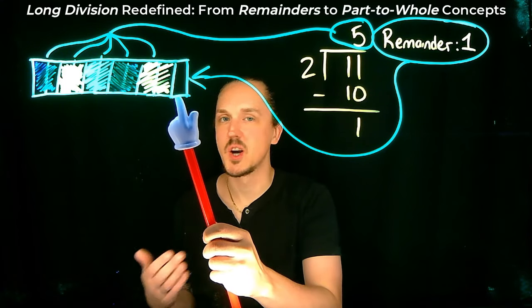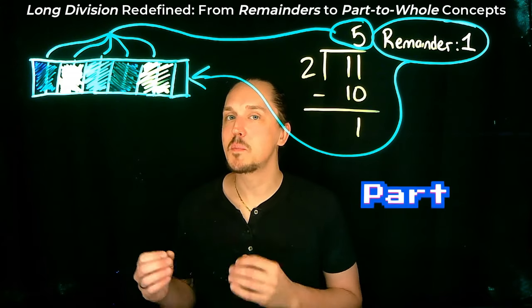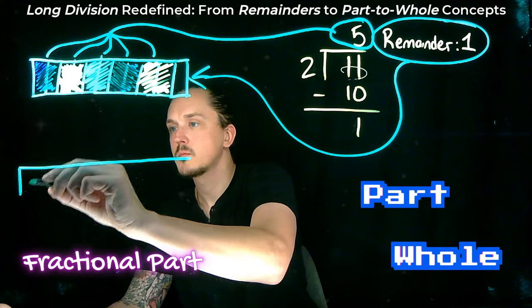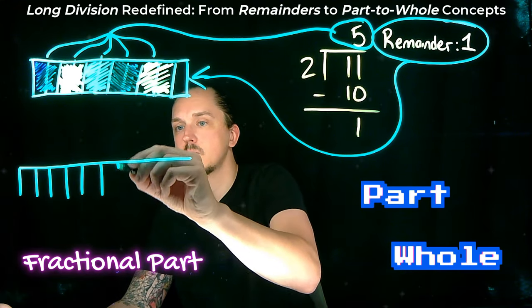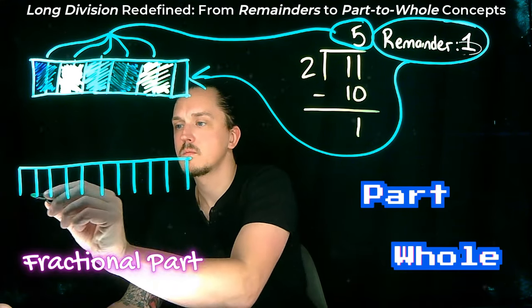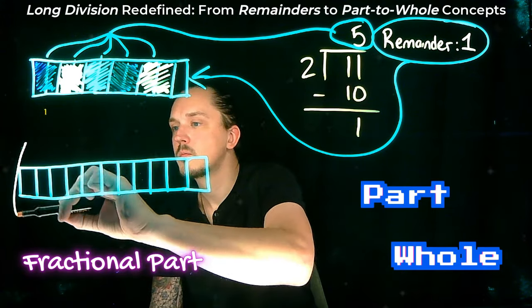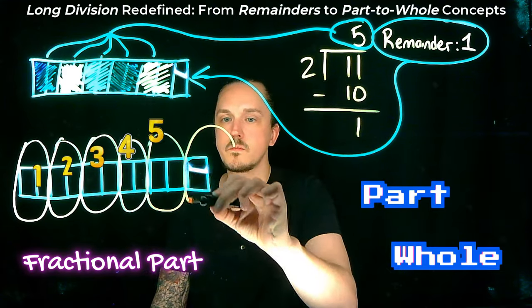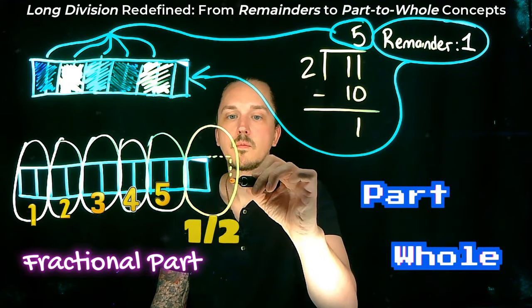Instead of seeing this leftover as just a remainder, we can think of it as part of a whole, a fractional part. So when we say 11 divided by 2 equals 5 with a remainder of 1, what we are really saying is 11 divided by 2 equals 5 whole groups of 2 and 1 part of 2 or 1 half.